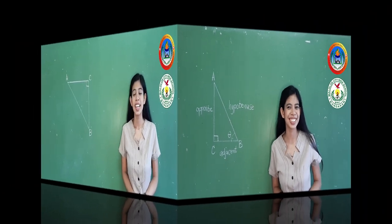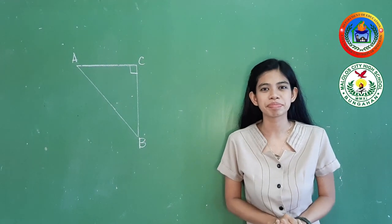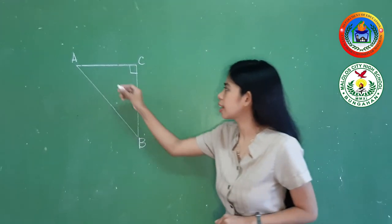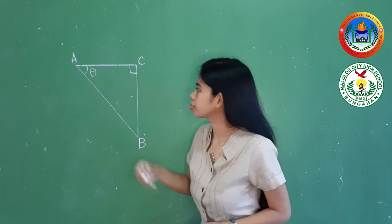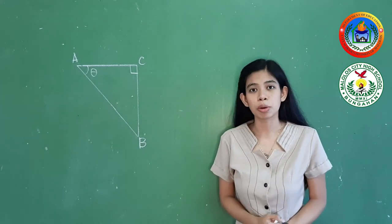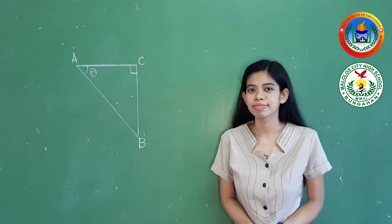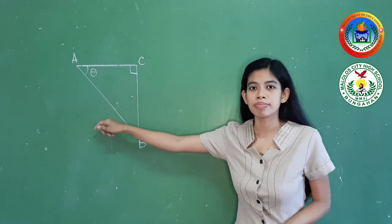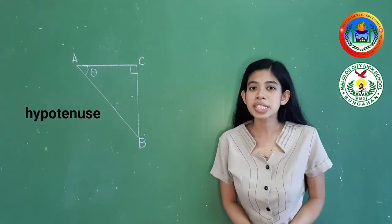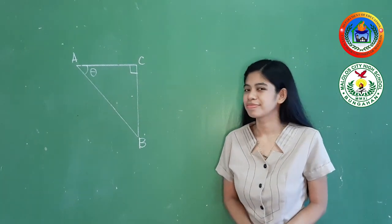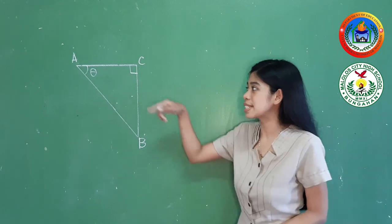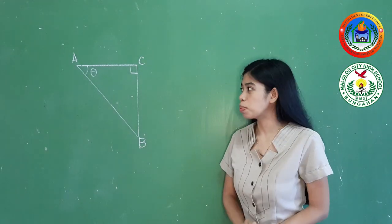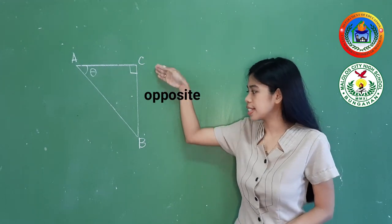While this side next to angle theta is what we call the adjacent side. Now let us try to name the parts of this right triangle. You are given right triangle ABC with right angle C and angle theta located at angle A. The hypotenuse is always opposite the right angle. The adjacent side is always next to angle theta. And the opposite side is opposite angle theta, so it is side CB.